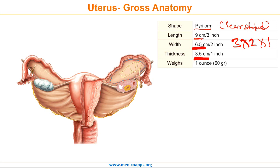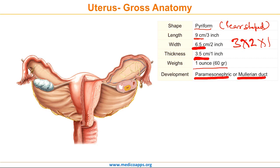The uterus weighs about 60 grams or 1 ounce. The uterus develops from the paramesonephric duct, which is also known as the Mullerian duct. We will study in detail about it in a separate video lecture.